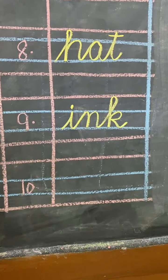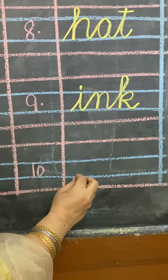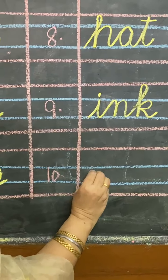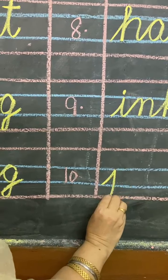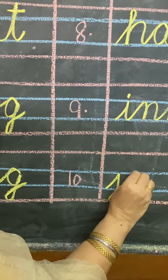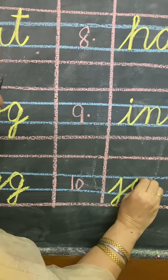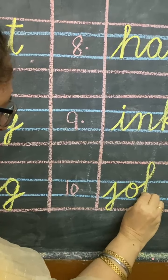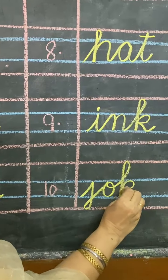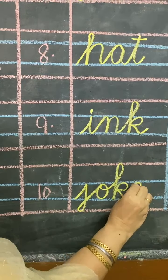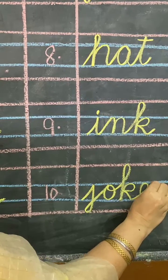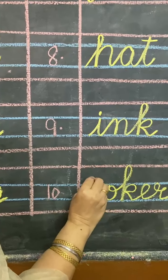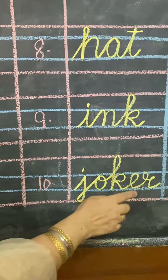Number 10, dictation word is J for Joker. J will come in lower three lines. O will come in two middle lines. Then K — K will come in upper three lines. E will come in two middle lines. And R will come in two middle lines. J, O, K, E, R — joker.